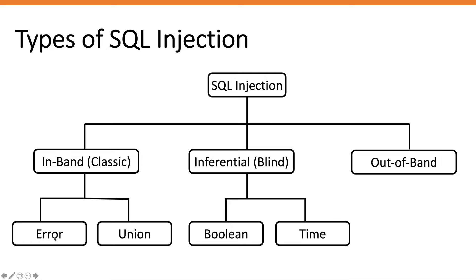In-band SQL injection is divided into two types: error-based SQL injection and union-based SQL injection. Error-based SQL injection is a technique where you force the database to generate an error, giving you more information about how things operate at the back end. For example, if you put a single quote into a vulnerable parameter, it breaks the backend query and generates an error that tells you things like the database type, its version, and sometimes even the exact SQL query being used.